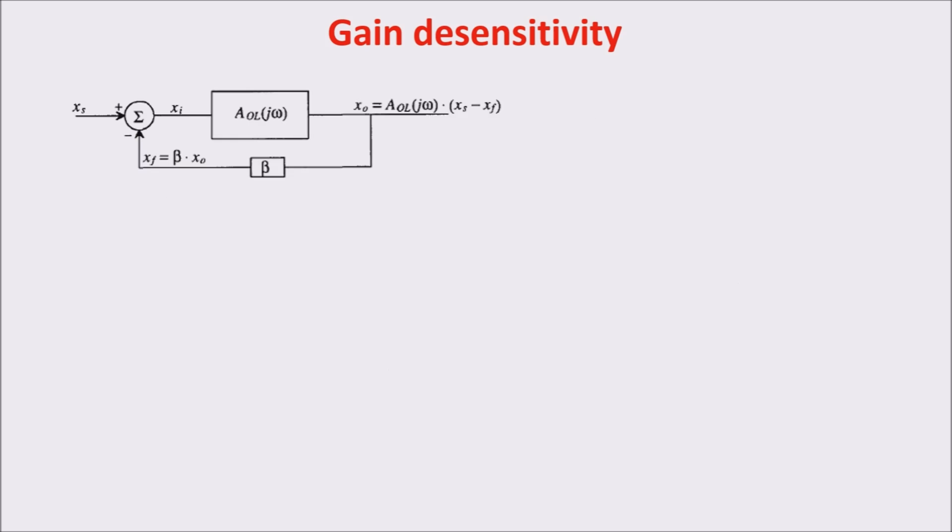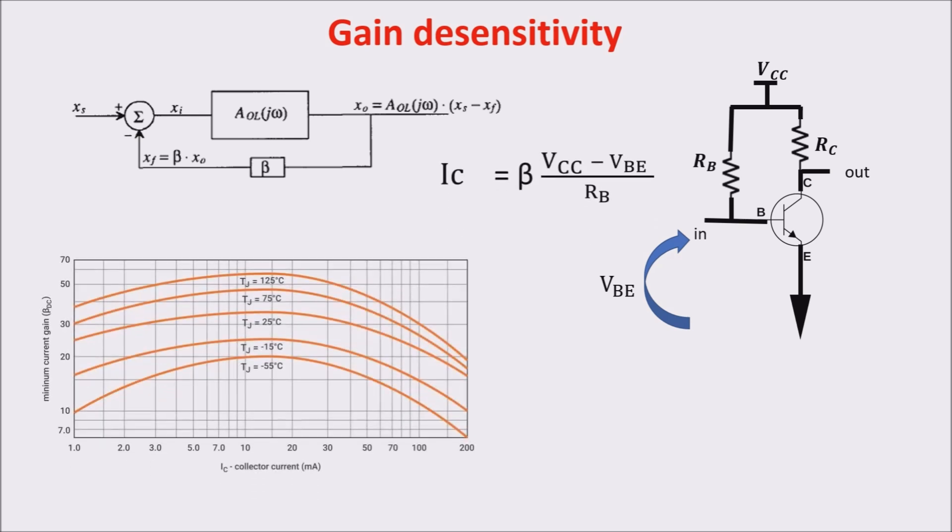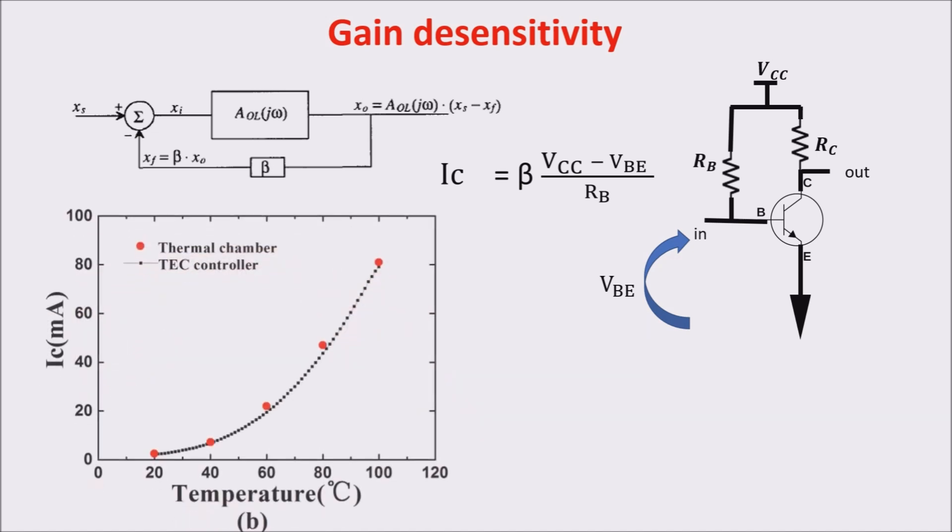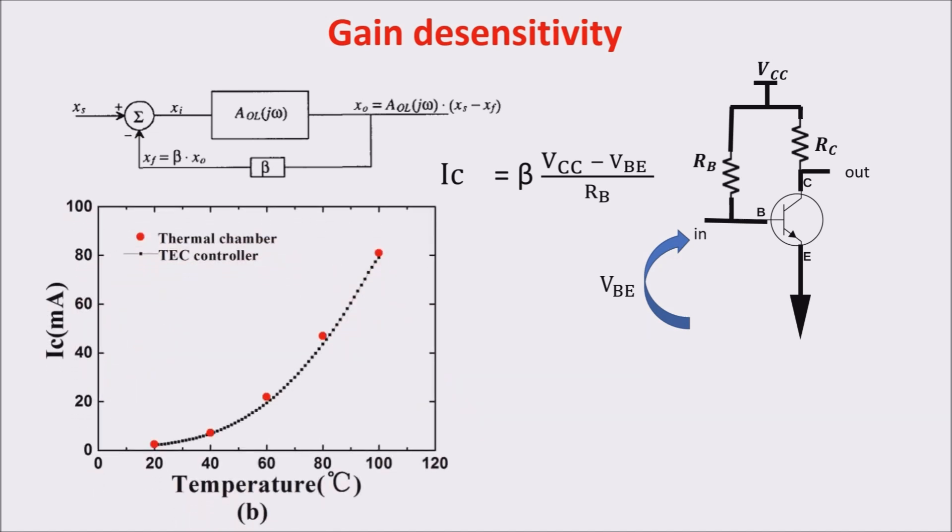A classical example of gain desensitivity through feedback is the emitter resistor in the biasing of the BJT. The collector current depends on beta which is temperature dependent. So, if the temperature increases, the beta increases, then the collector current increases as well. Increasing the collector current makes the temperature increase even more and this can go on till some damage occurs. This phenomenon is called thermal runaway. Moreover, this dependence on the temperature makes the gain of the stage temperature dependent, thus showing different gain at different temperatures.